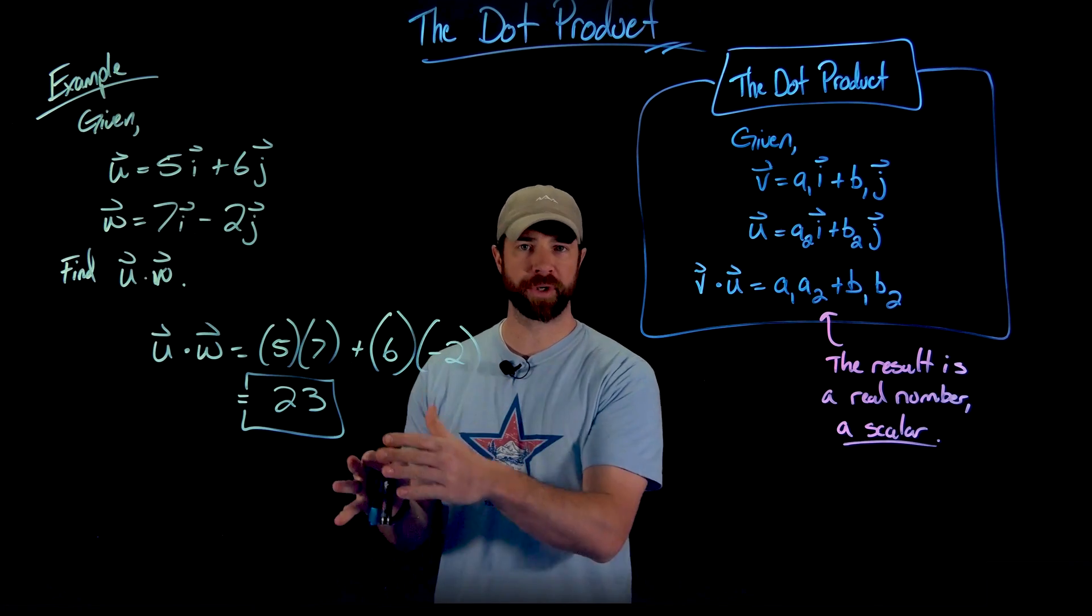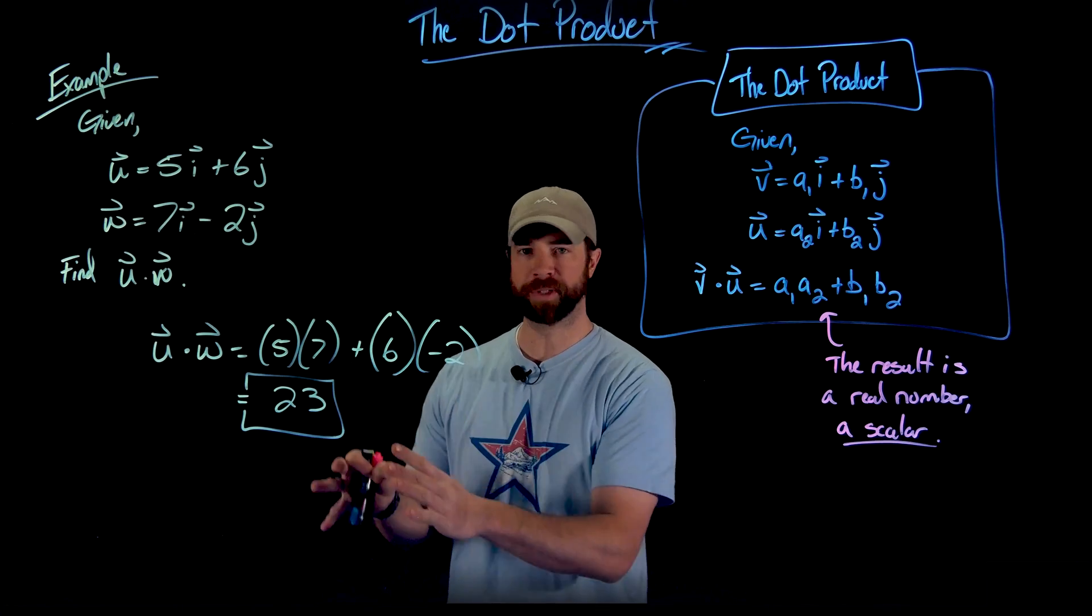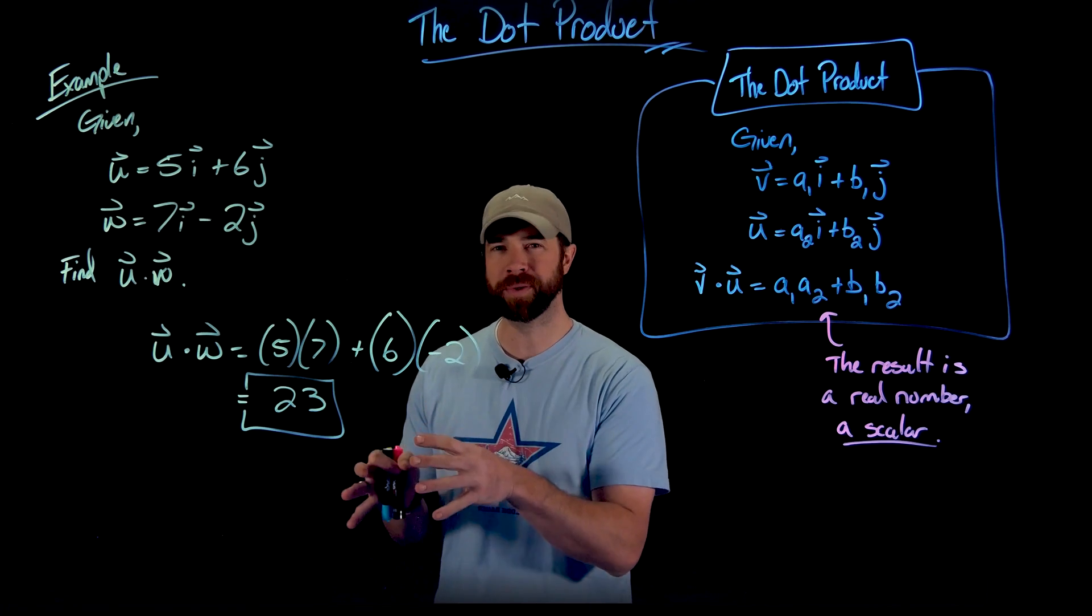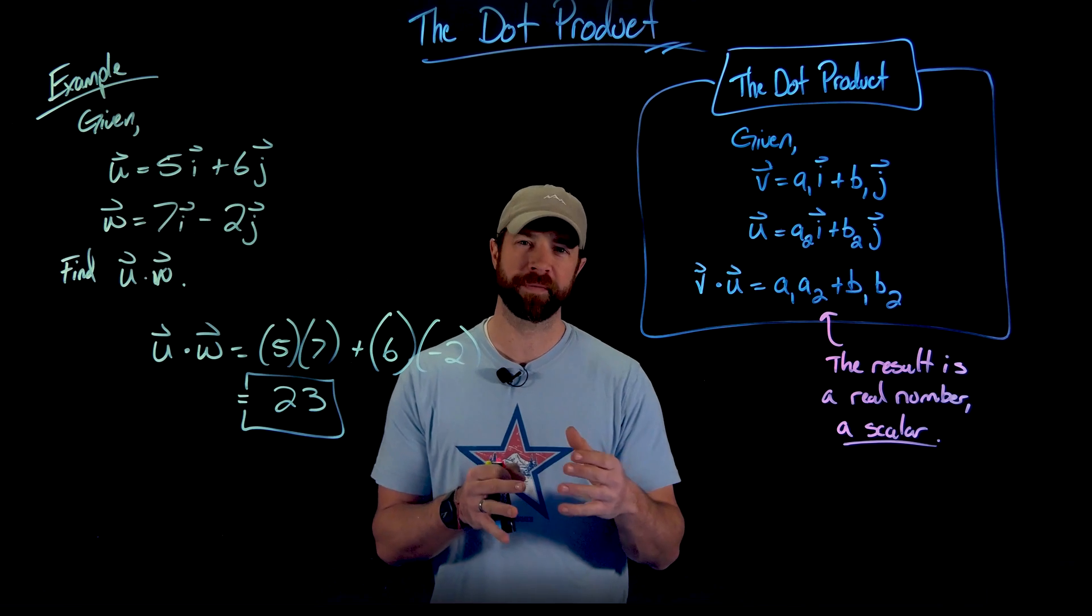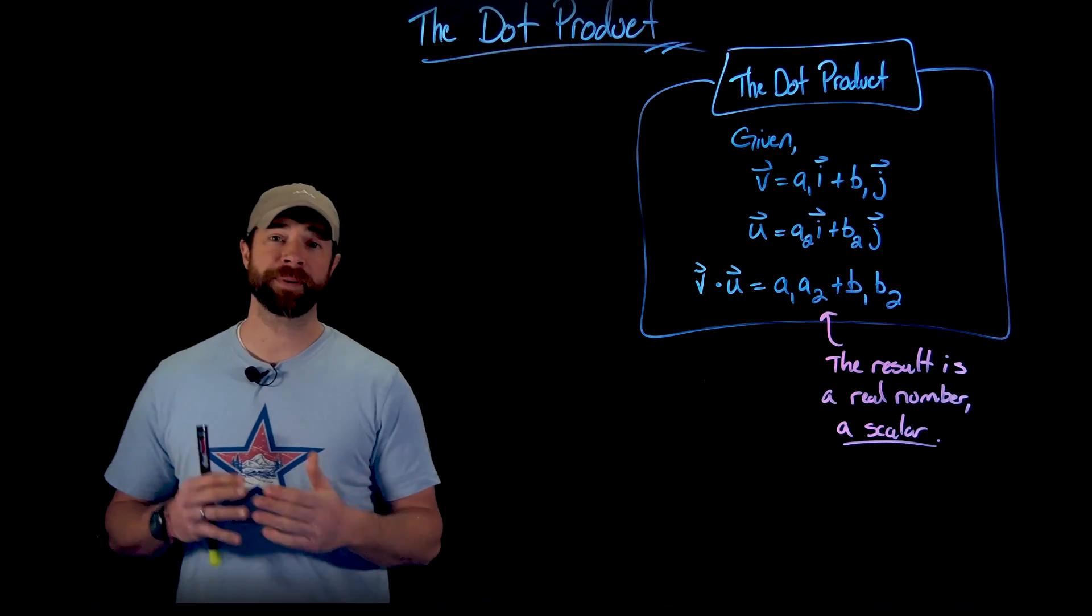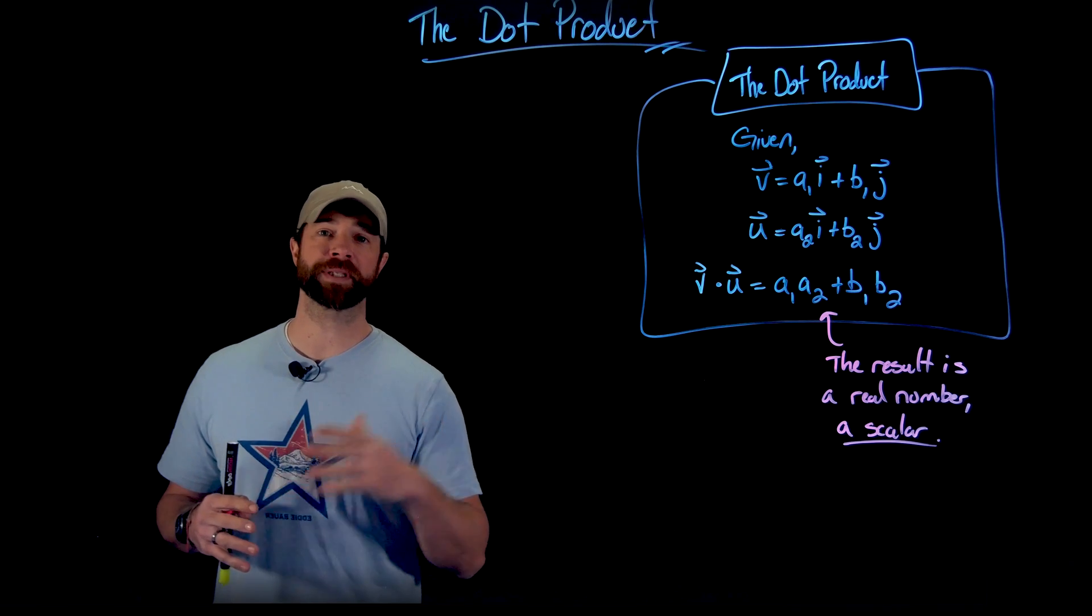And again, to emphasize, the result as we expected is a real number. It's not a vector, though you'll see very soon when we talk about projections how we use this to create important vectors in the relationship between two different vectors. So next up, I just want to list a few important characteristics of the dot product.